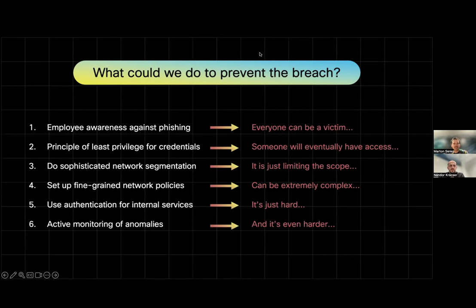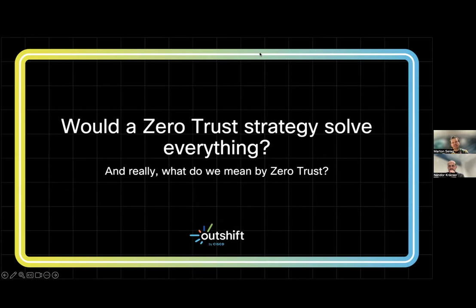And active monitoring of anomalies is even harder — creating or buying a system like that won't be a hundred percent sure to catch all attackers. Even if they send alerts, they won't necessarily be investigated properly, as I've just shown. So all these things have problems. In general, they can be restrictions or reactive solutions. But the question is: do we have something that is able to prevent all those lateral movements?